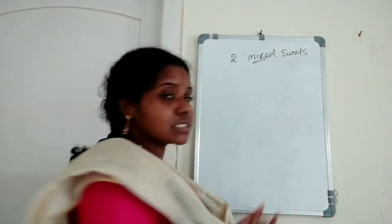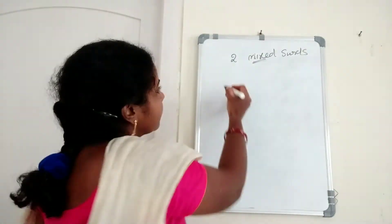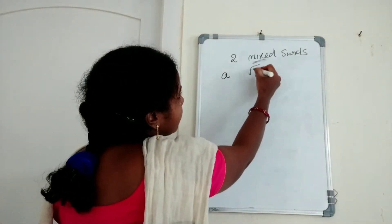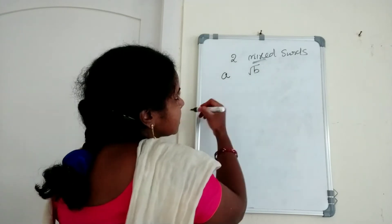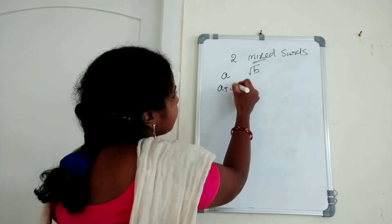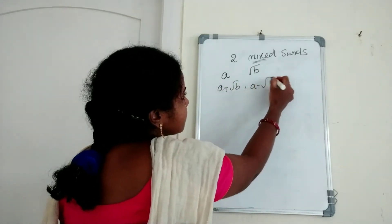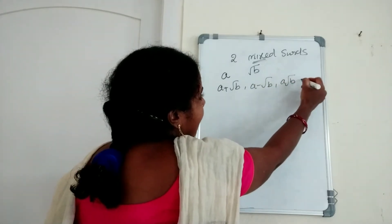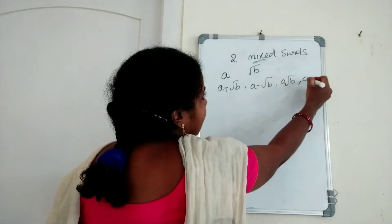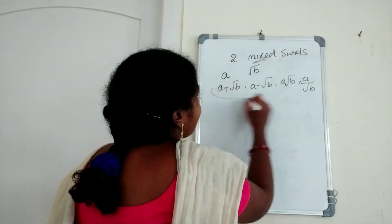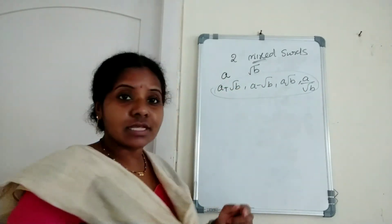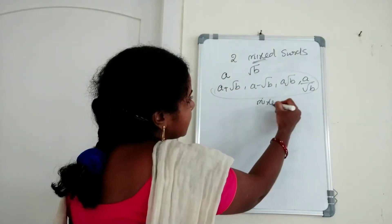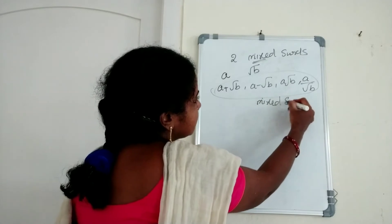First of all, what is a mixed surd? A is a rational number and root B is a surd. So A plus root B, or A minus root B, A into root B, and A by root B — these are mixed surds.